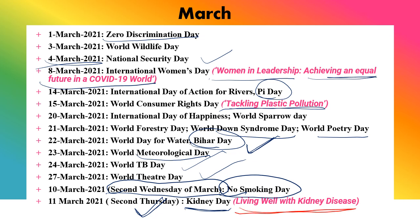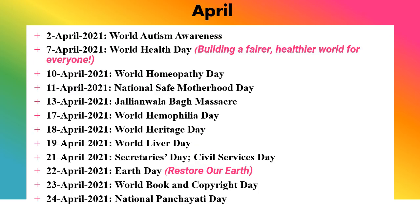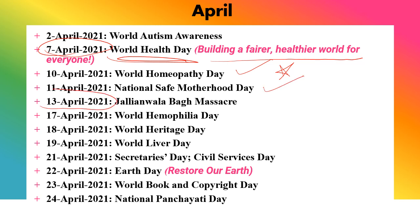April: 2nd April is World Autism Awareness Day. 7th April is very important — World Health Day — with theme 'Building a Fairer Healthier World for Everyone.' 10th April is Homeopathy Day, which appears frequently in exams. 11th April is National Safe Motherhood Day. 13th April: in 1919 the Jallianwala Bagh Massacre took place. 17th April is World Haemophilia Day. 18th April is World Heritage Day. 19th April is World Liberty Day. 21st April is Civil Services Day. 22nd April is Earth Day, with the very important theme 'Restore Our Earth.' 23rd April is World Book and Copyright Day.